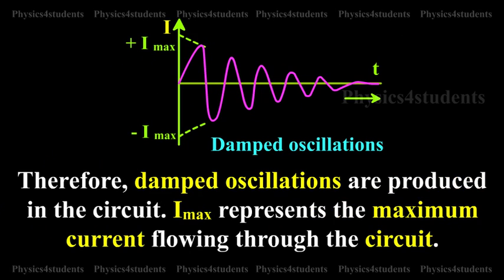Therefore, damped oscillations are produced in the circuit. Imax represents the maximum current flowing through the circuit.